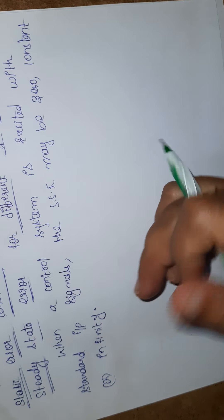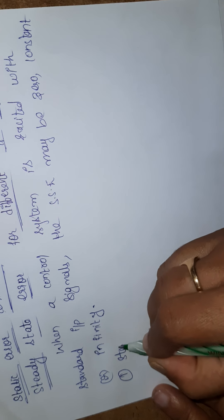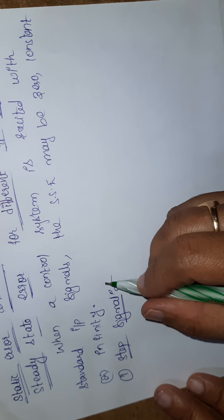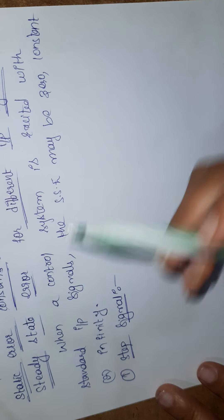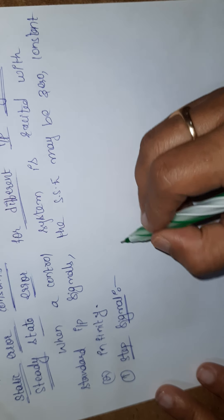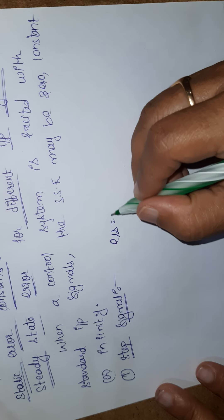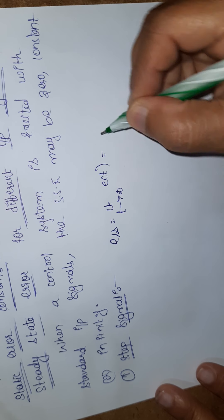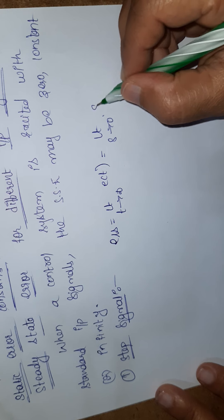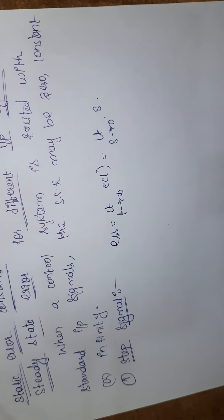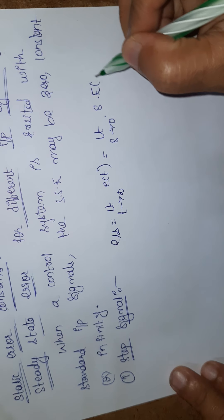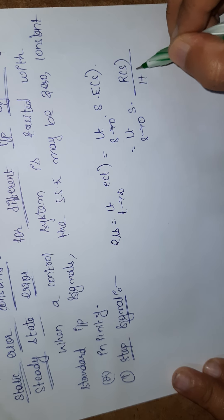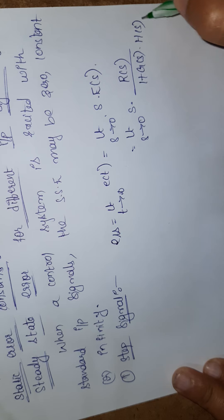For the first case, I am taking a step signal, that is u(t). For this step signal, we know that steady state error can be calculated as E_ss equals the limit as t→∞ of E(t), which using the final value theorem becomes limit s→0 of s·E(s), where E(s) = R(s) / (1 + G(s)H(s)).